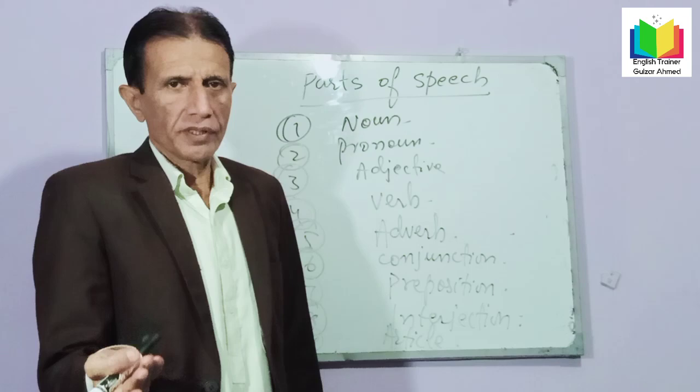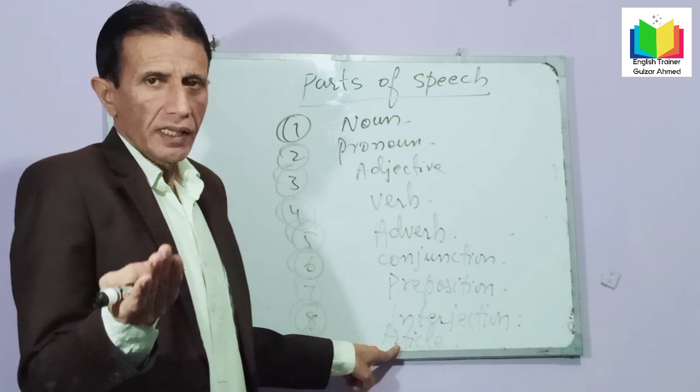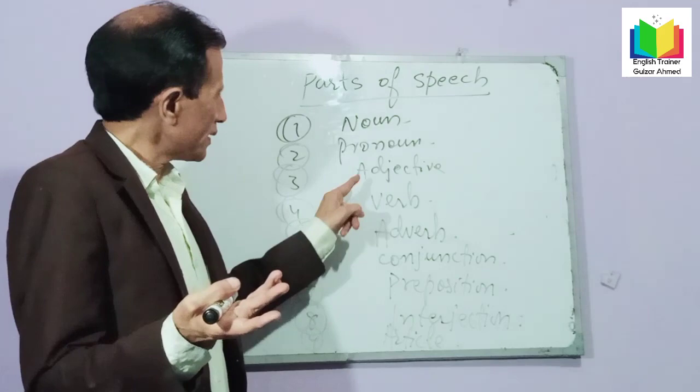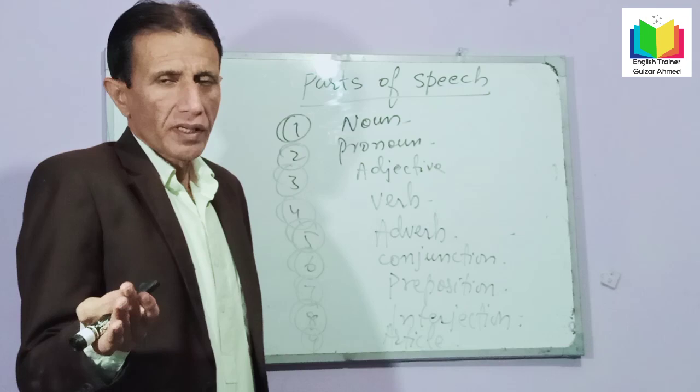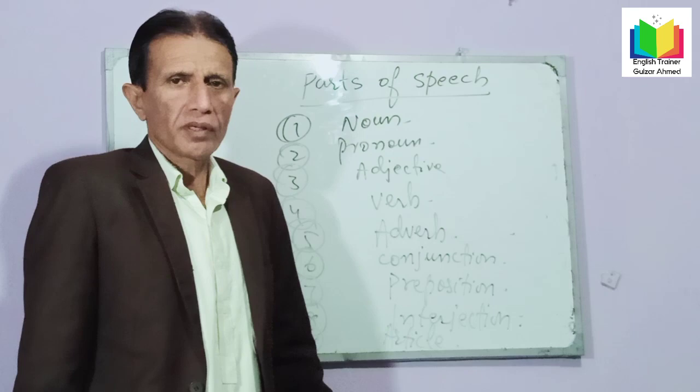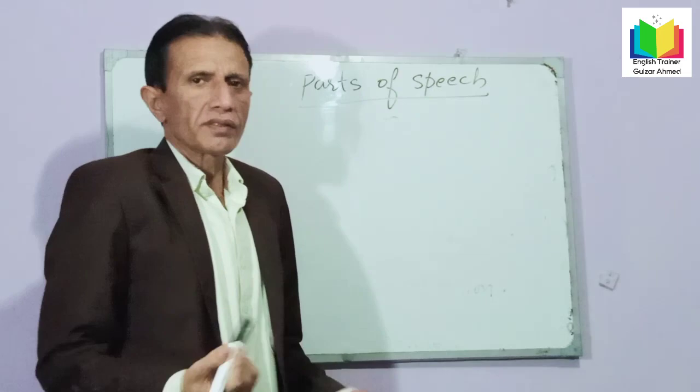So guys, these are the parts of speech. Some grammarians have merged article and adjective because these are the same things — articles come before a noun and adjectives also come before a noun. So first of all, I will talk about noun. Today I will teach you about noun.